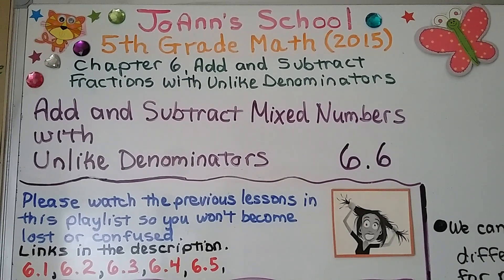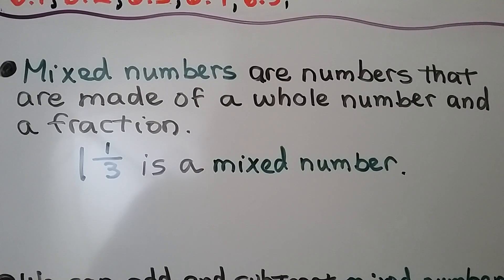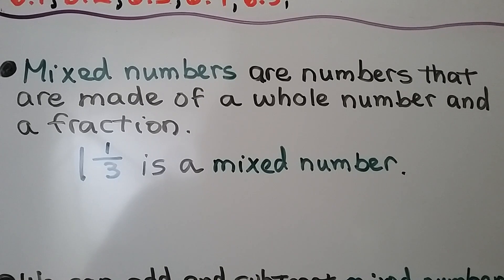Lesson 6.6: Add and Subtract Mixed Numbers with Unlike Denominators. Mixed numbers are numbers made of a whole number and a fraction. For example, 1 and 1 third is a mixed number — we have the whole number 1 and the fraction 1 third.